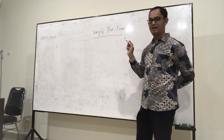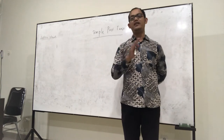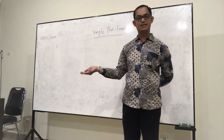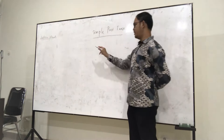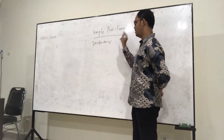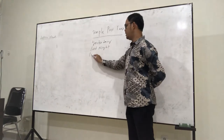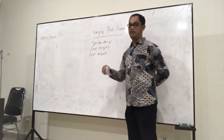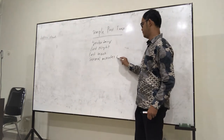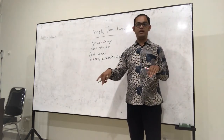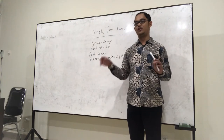Simple past tense is a sentence used to express ideas or something that happened in the past. So we can talk about something that happened yesterday, last night, last week, several minutes ago, this morning, last year — everything that happened in the past. So we have to use this formula of sentence, which is simple past tense.